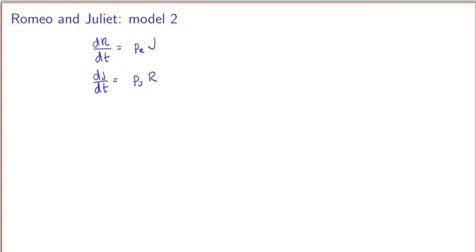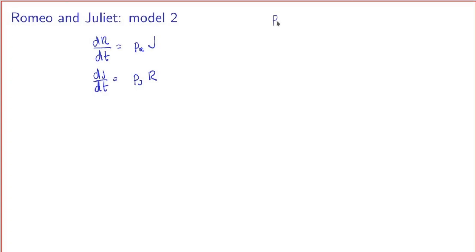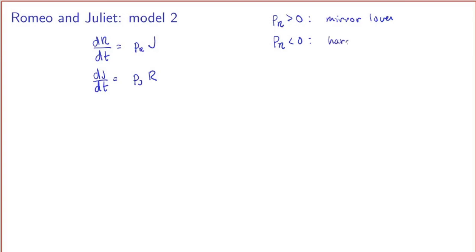This is quite different. Again, we distinguish between two cases based on the signs of the coefficients. If the coefficient is positive, when Juliet is in love, Romeo becomes more and more in love — this is what I call a mirror lover. Similarly, if Juliet hates Romeo, Romeo hates her more. But if the coefficient is negative, it's the other way around: if Juliet is in love, Romeo doesn't like it, whereas if Juliet hates Romeo, Romeo gets excited and starts loving her — so he's playing hard to get.